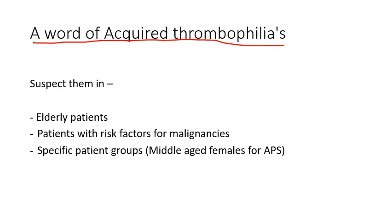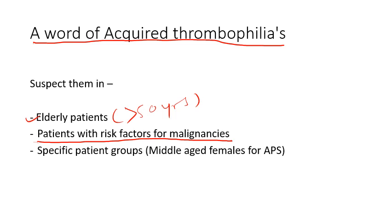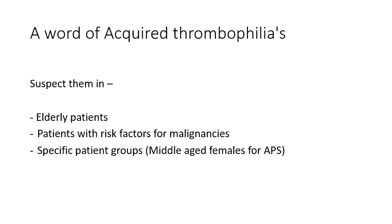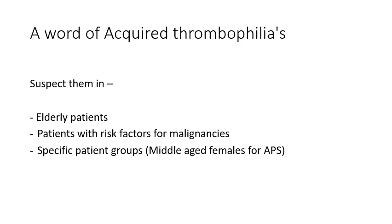When should you suspect acquired thrombophilias? Unlike hereditary thrombophilias (suspected in young patients with recurrent or familial thrombosis), acquired thrombophilias are suspected in elderly patients over age 50, in patients with risk factors for malignancy such as smokers or those at risk for gastric or pancreatic cancer, and in young or middle-aged females — particularly a young woman presenting with recurrent abortions or thromboembolic disease, where antiphospholipid antibody syndrome should be high on the list.